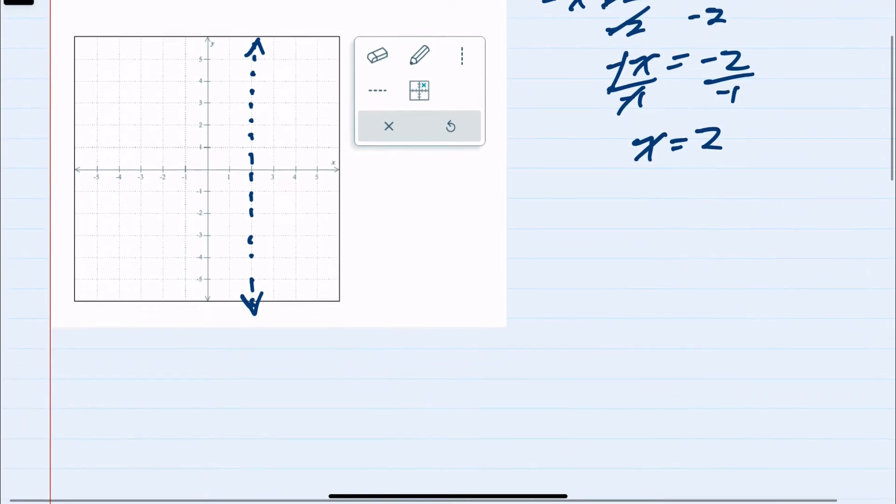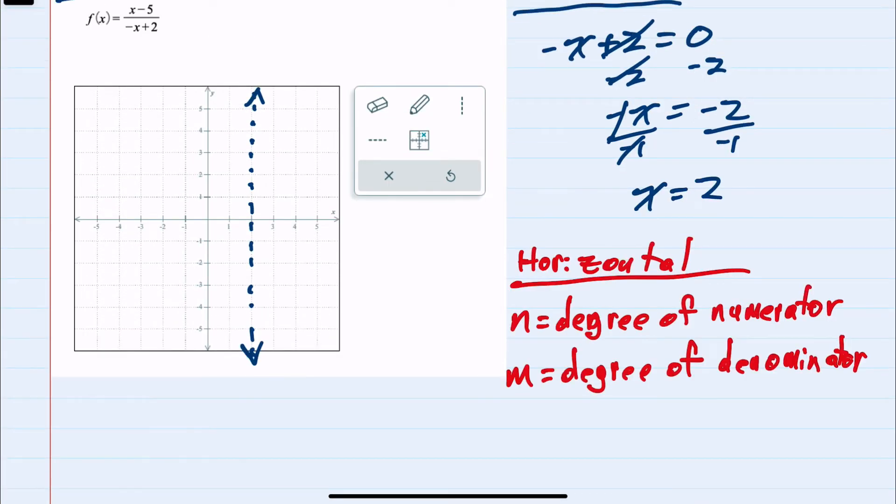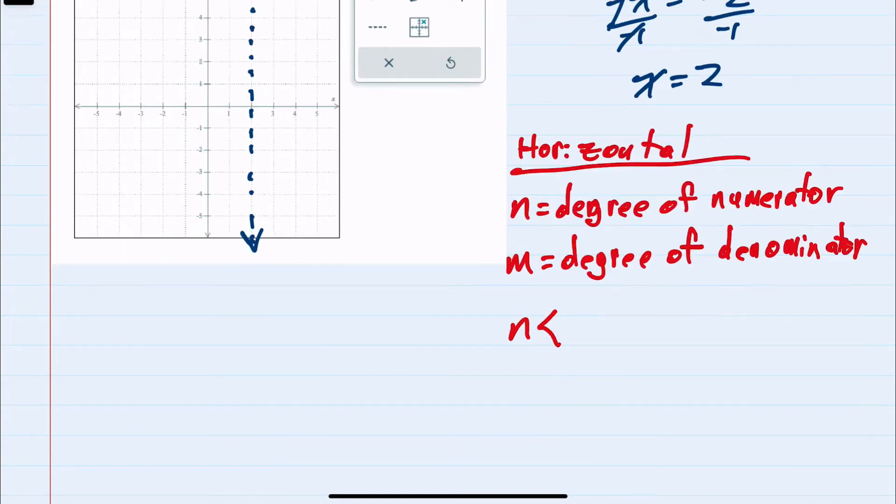And then for the horizontal, we'll look at the degree of the numerator, which we'll call n, and the degree of the denominator, which we'll call m. If the degree of the numerator is less than the degree of the denominator, the denominator is going to get large quicker. And when the denominator of a fraction gets large, then the fraction is moving closer to 0. But since it can't get there, our asymptote would be y equals 0.